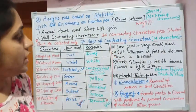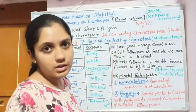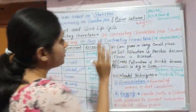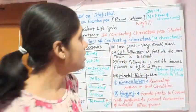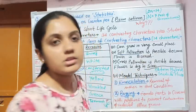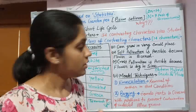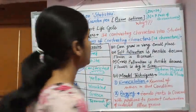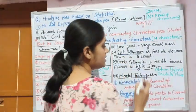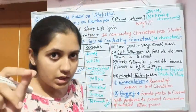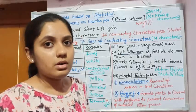The third point is that we can grow the pea plant in a very small space. The fourth point is that self-pollination is possible because the pea plant flower is bisexual — it has both female and male reproductive parts — so we can do self-pollination easily. Cross-pollination is also possible because the flower is large, so we can place pollen grains on the stigma very easily without breaking the flower.